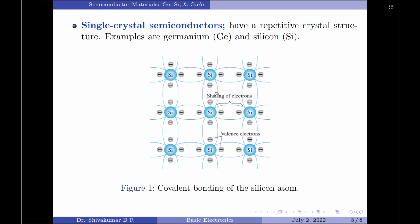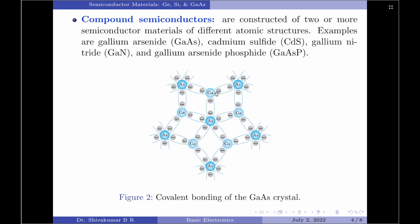Let us now move on to compound semiconductors. Compound semiconductors are constructed of two or more semiconductor materials of different atomic structures. As the name itself is very clear, it is a compound of two or more semiconductors.